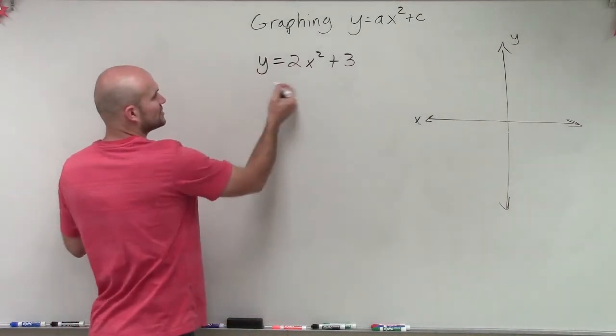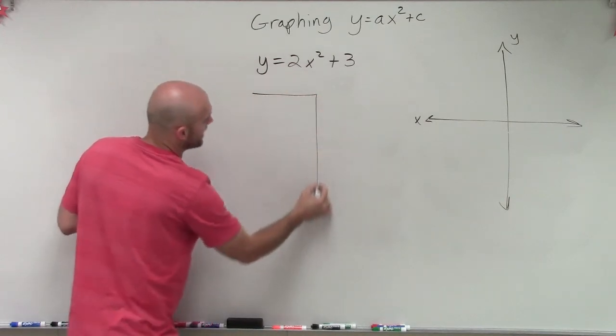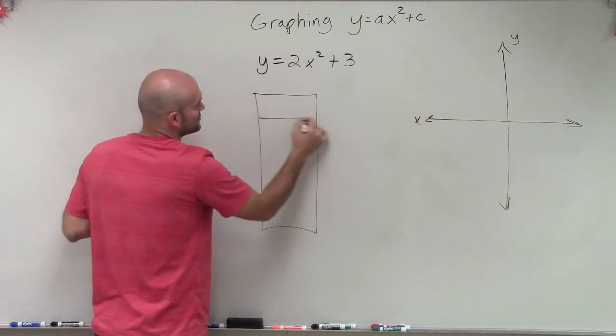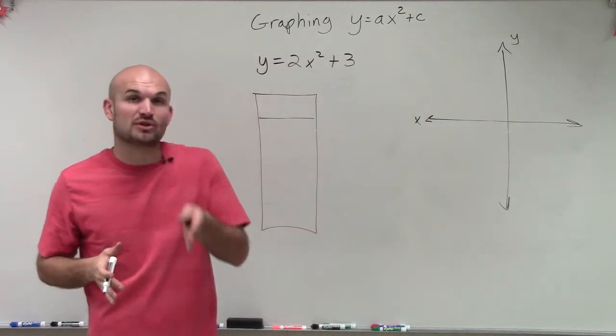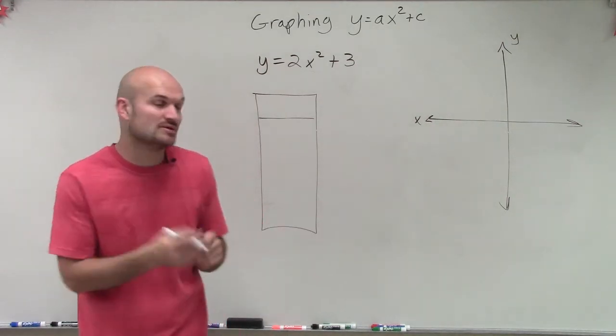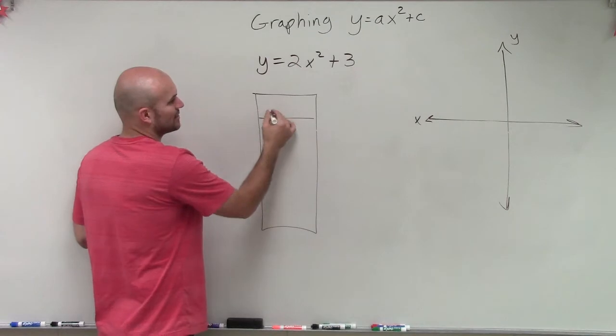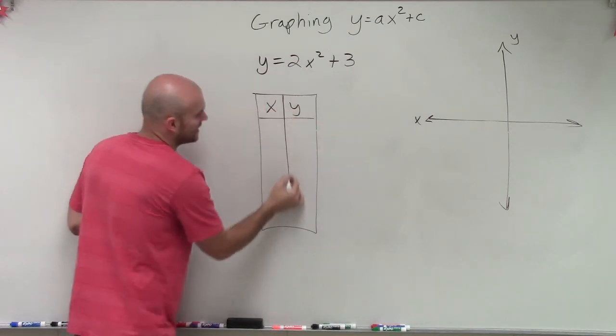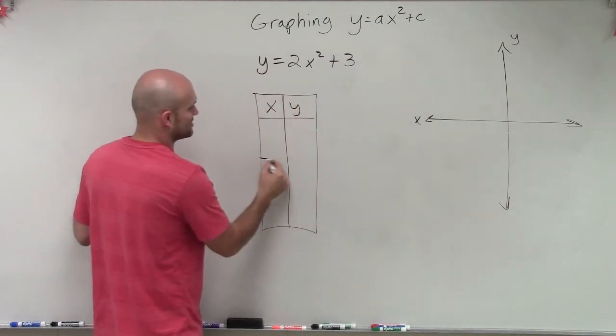So what we're going to do is we're going to start at our axis of symmetry. The axis of symmetry, the line that is going to split our quadratic that's going to be equal on both sides, is at 0. So we need to start with that understanding. That's going to be our axis of symmetry.